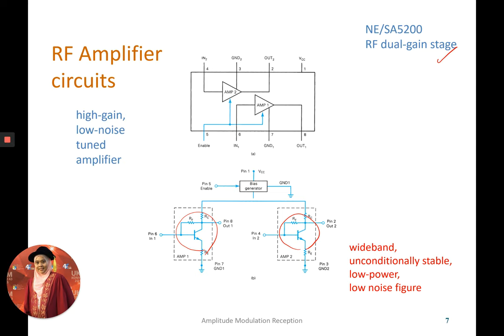And this is the common IC that you may use, NE/SA5200. And this type of amplifier circuit, basically it's a wideband and it's very stable, has low noise, low power. You may use it in designing your own AM receiver.